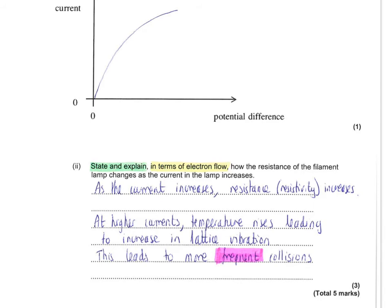Next, we need to explain why. At higher currents, the temperature rises. This leads to an increase in the lattice vibrations of the metal ions. And finally, this increase in vibration leads to more frequent collisions.